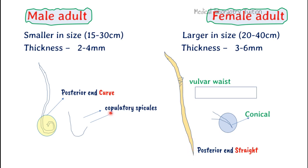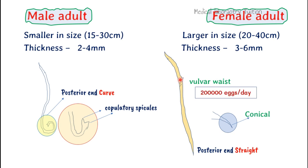Another important feature is two spikes at the posterior end of the male, which are called copulatory spicules. These spicules are not present in the female — the female's posterior end is conical. A unique feature of the female is the vulvar region, which is a sex organ. One female can produce 2 lakh (200,000) eggs per day.